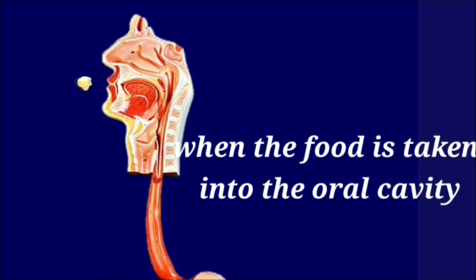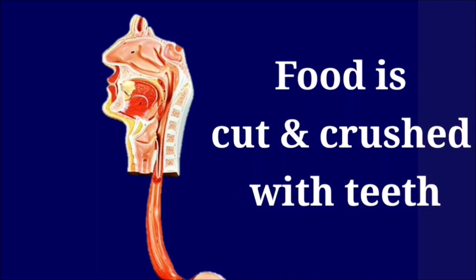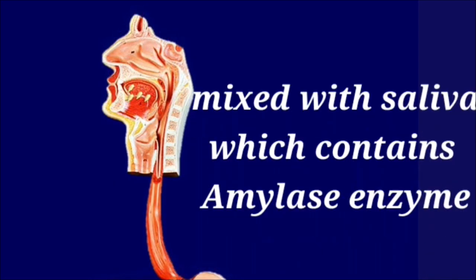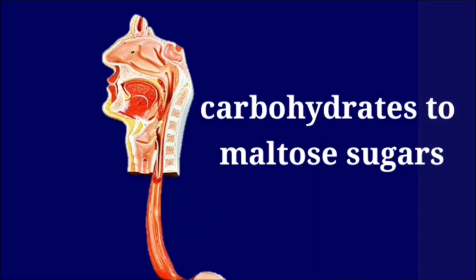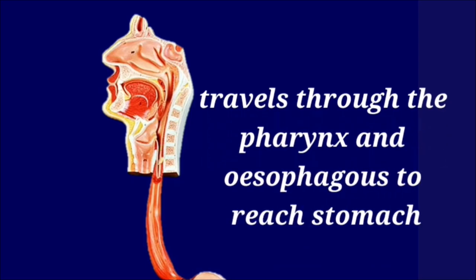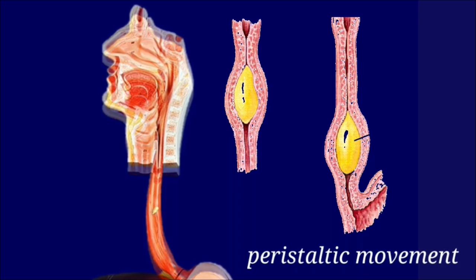When food is taken into the oral cavity, it is cut and crushed by the teeth, and with the help of the tongue it is mixed with saliva, which is secreted by the salivary glands. Saliva contains an enzyme called amylase. The action of amylase converts carbohydrates into maltose sugars. After this, the food begins traveling through the pharynx and esophagus to reach the stomach.